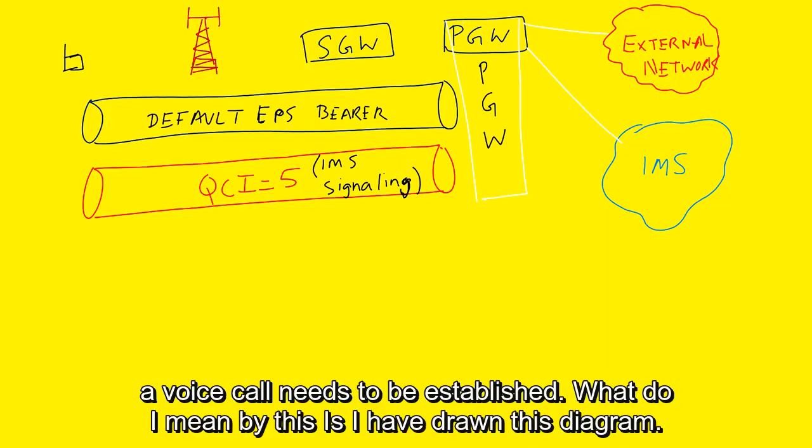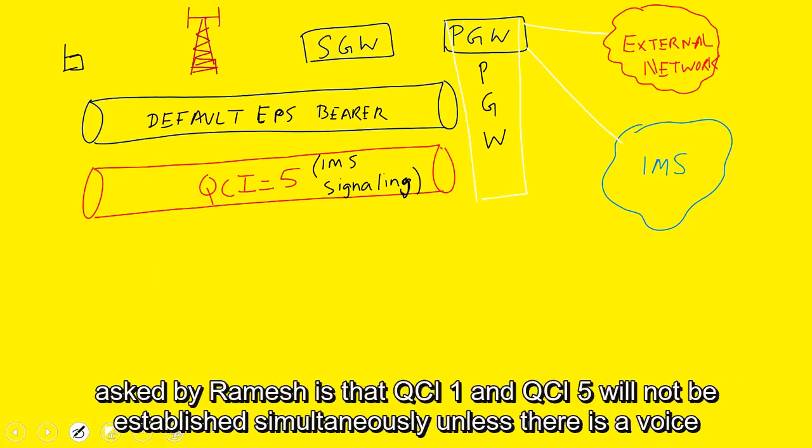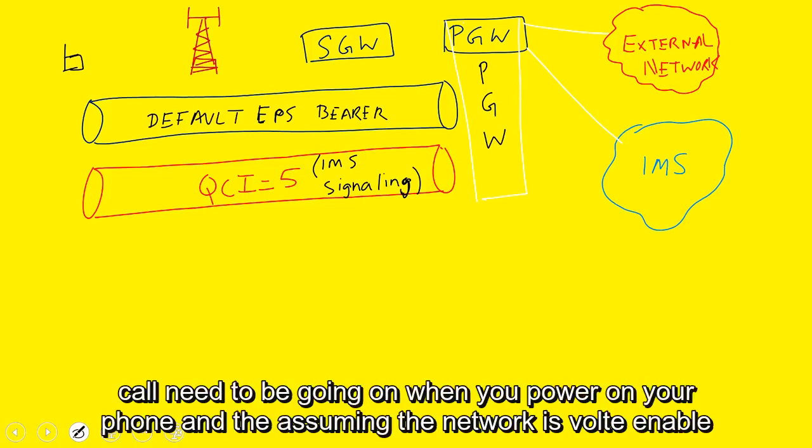What do I mean by this? So I have drawn this diagram. I am not going to explain how the EPS bearer attach works but just to answer the question being asked by Ramesh: QCI1 and QCI5 will not be established simultaneously unless there is a voice call that needs to be going on.